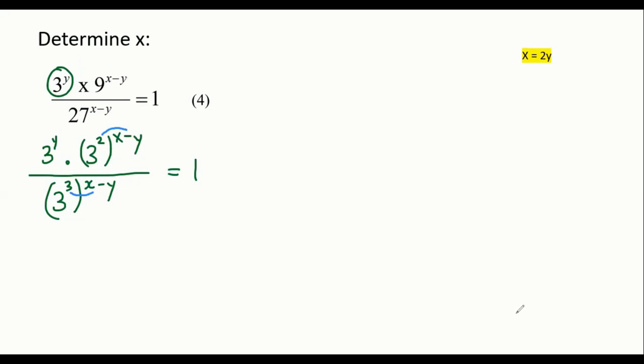So what we're going to do now is we're just going to go 3y and then multiply. Now we're going to multiply the 2 in. So that's going to become 3 to the power of 2x minus 2y. And then at the bottom, it's going to be 3 to the power of 3x minus 3y equals 1.